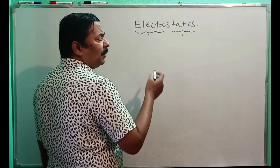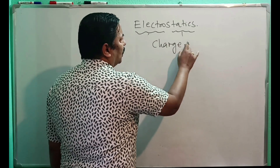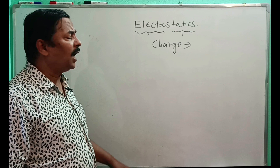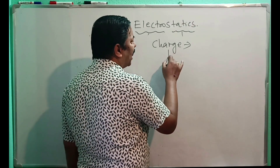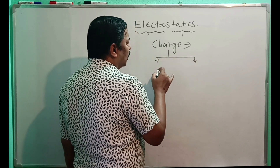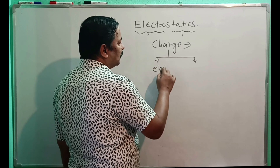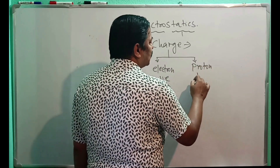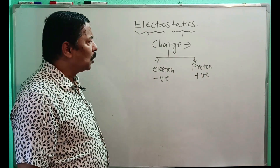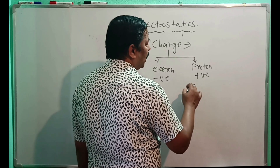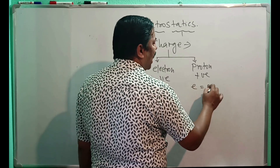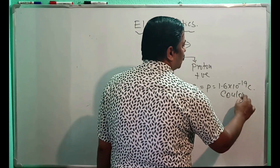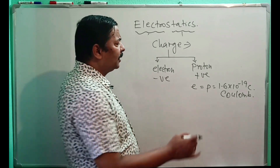The question arises: what is charge? Charge governs the electrical behavior of the surrounding as well as the substance. You already have the idea that it is of two types: one charge is on the electron, which is negative, and one charge is on the proton, which is positive. The magnitude of charge on an electron or proton is 1.6 × 10⁻¹⁹ coulombs. Coulomb is the unit of charge, and charge is a scalar quantity.